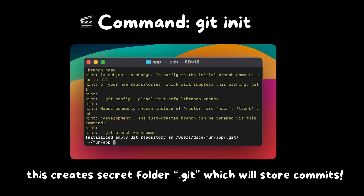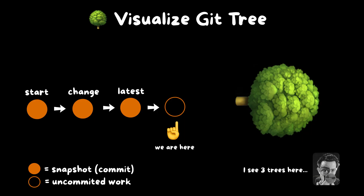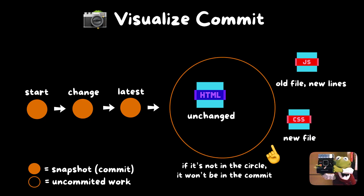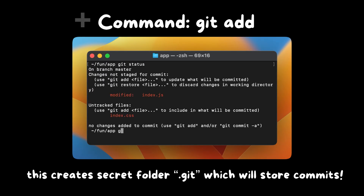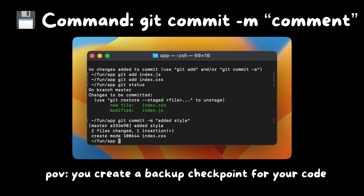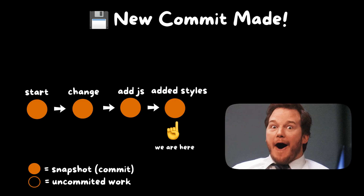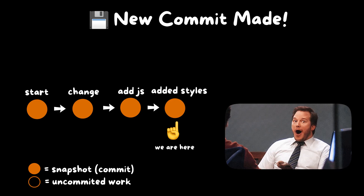Whenever you start a project, you'll want to run the command git init to set up Git in your folder. You can then run git status to make sure it works. In Git, these checkpoints or snapshots are also called commits — you can think of them like a group photo. Before you save, you need to tell Git what to include in the picture. You can add files using git add and then the filename. Along with the snapshot, you can include a useful comment that tells you what you worked on in this commit, so you'll be able to remember quickly without looking at the commit itself.